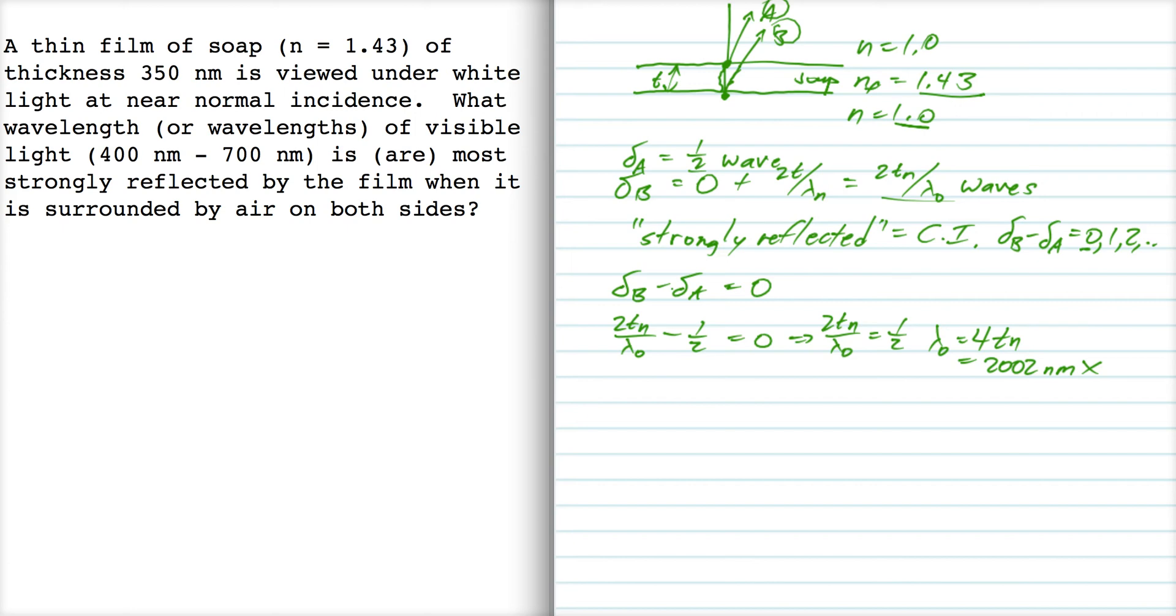Let's try the next solution. The next solution would be delta B minus delta A is equal to one. Well, when we solve that, we get two t over lambda-naught is equal to three halves, which means lambda-naught is four t over three. Well, that's six hundred and sixty-seven nanometers. That's in the visible light range between four hundred and seven hundred nanometers, so that's a good solution.